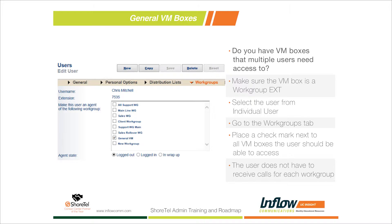First, we need to make sure the extension we're going to use is already set up as a workgroup mailbox. If not, we create a new workgroup mailbox, put a greeting into it, call it, and make sure it works. Once the workgroup mailbox is set up, we can configure email notifications for voicemails. We can send notifications to an Outlook distribution list so four or five people receive an alert that a new voicemail needs to be checked.